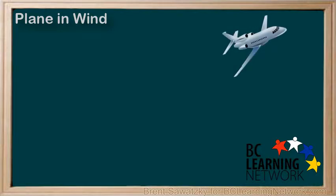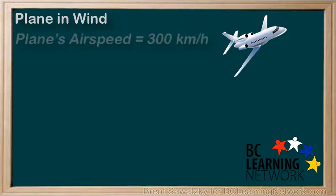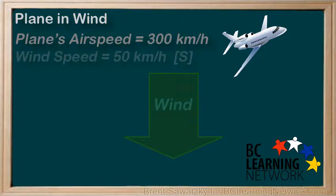Let's consider an airplane flying in the wind. The airplane has an airspeed of 300 kilometers per hour — that is, it can fly 300 kilometers per hour in still air. The average wind is going south at 50 kilometers per hour.